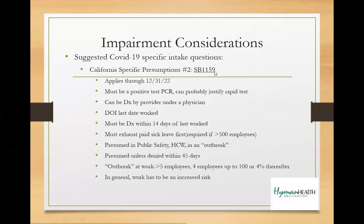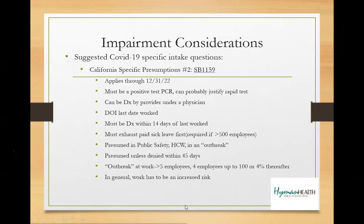Under SB 1159, an outbreak is defined as greater than five employees, or four employees up to 100, or 4% thereafter. In SB 1159, work has to be an increased risk — it's not just every case. I see patients all the time who say 'I got sick' as if that alone qualifies. There has to be a history with reasonable attribution so you can evaluate whether the presumption applies.